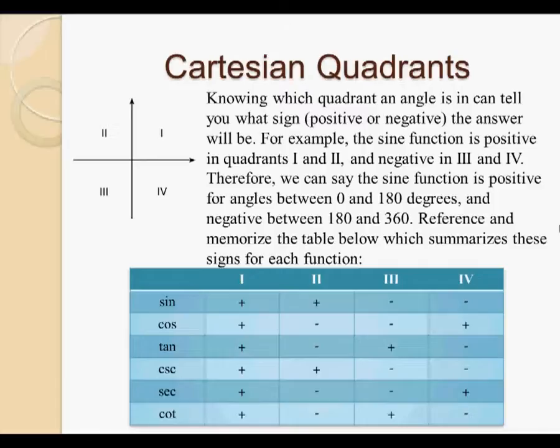Notice how sine is positive in both one and two, and then it's negative in three and four, while cosine is positive, negative, negative, positive, and tangent jumps between positive and negative. Also notice that sine and its corresponding reciprocal function, cosecant, have the same signs in the same quadrants. This is also the same for cosine and secant, and tangent and cotangent.